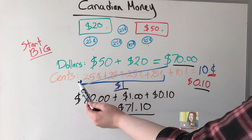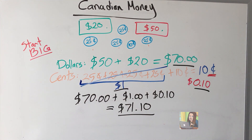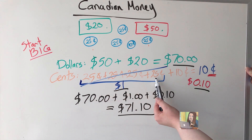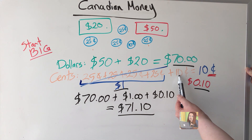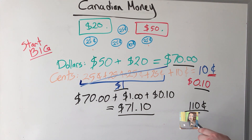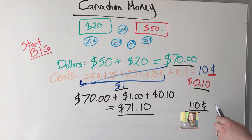So this is one way we can use to regroup cents to create dollars. You're going to find sometimes that the cents go over 100. If I had kept counting — 25, 50, 75, 100, 110 — 110 cents is over 100, and that 100 gives me a nice round dollar. That's another way of looking at it: taking out the hundreds. That's it for this video. The next video will look at adding amounts of money.